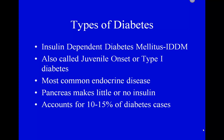Insulin-dependent diabetes mellitus, called IDDM, is also called juvenile onset or type 1 diabetes, and it is the most common endocrine disease. However, it only accounts for 10 to 15 percent of diabetes cases. In this case, the pancreas is not working — these patients are usually diagnosed younger, which is why one name is juvenile onset. Generally, their pancreas is not producing insulin as it should.